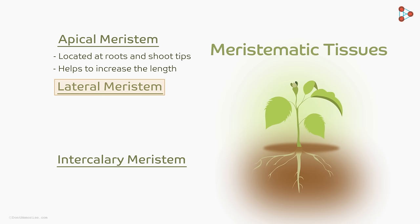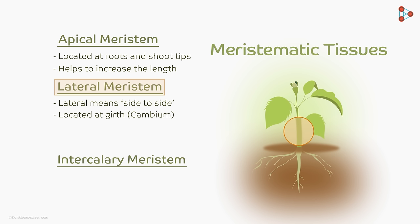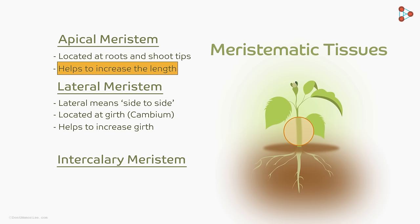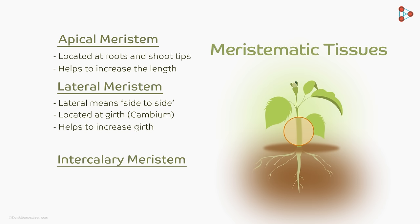The word lateral means side to side, and this relates to the girth of the plant. The lateral meristematic tissue divides and increases the girth of the plant. So apical increases the length, and lateral increases the girth. This girth of the plant is also known as the cambium.